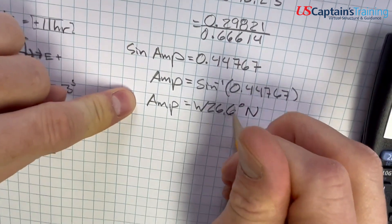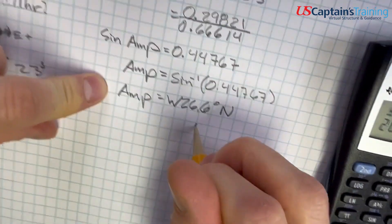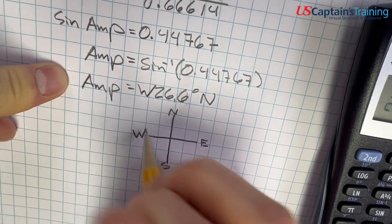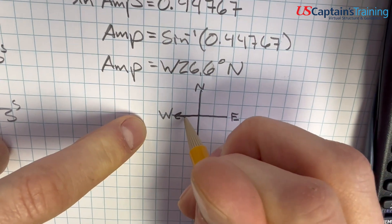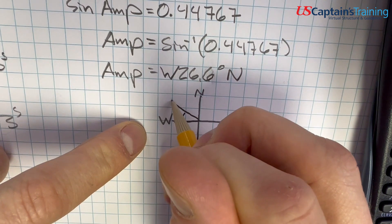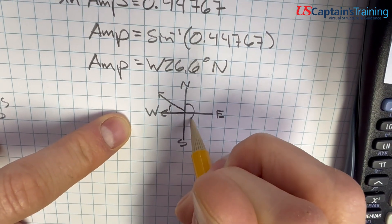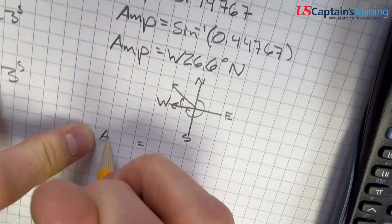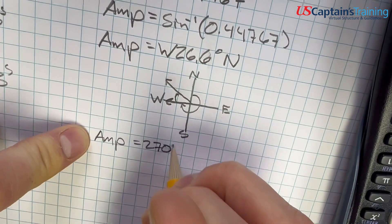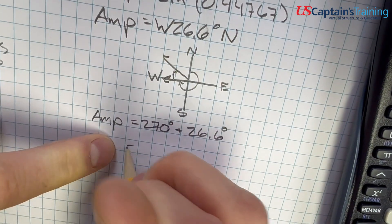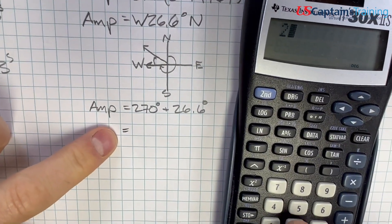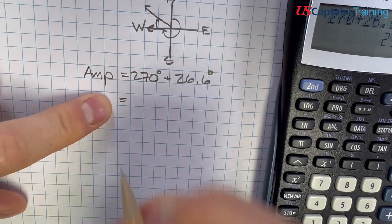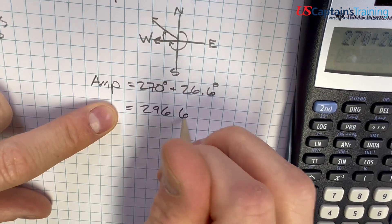Now we need to figure out our amplitude from north. This is amplitude north of west. So let's draw this out. I'm going to say north, south, east, west. And so we are west, and we are north of west by 26.6 degrees. So we need to add all this 270 plus this 26.6. So the amplitude from north is going to equal 270 degrees plus 26.6 degrees. So our amplitude from north equals 270 plus 26.6 equals 296.6. So 296.6 degrees true.